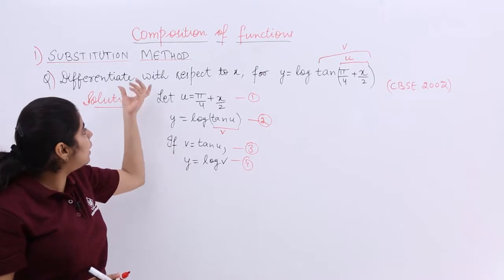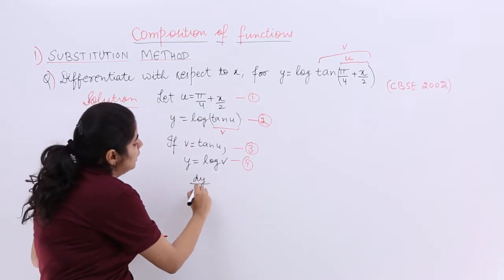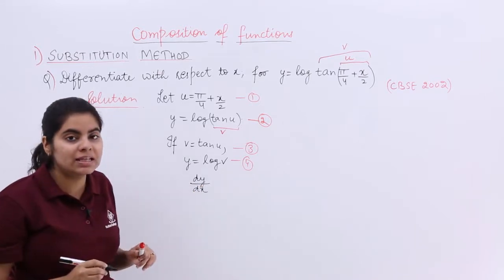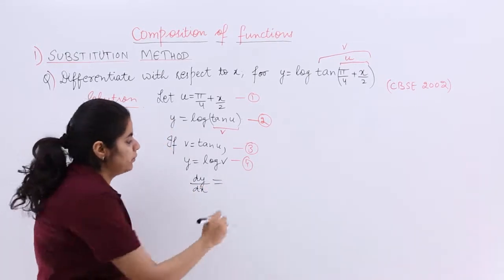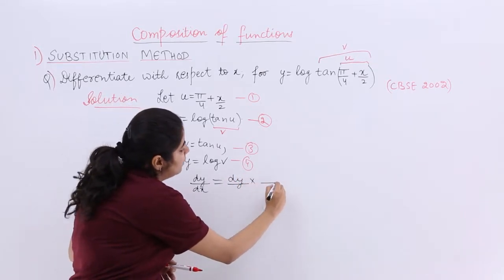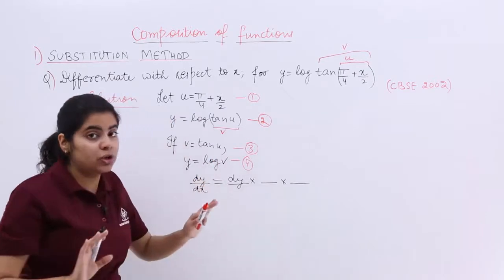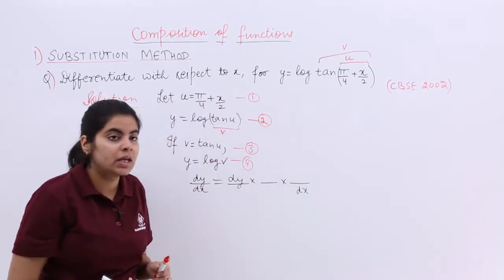The motto remains the same to find differentiation with respect to x. That means to find dy by dx. But this time not only one substitution rather two substitutions are there. So it becomes dy by something multiply by something multiply by something we are not sure of it. The last would be dx and things will cancel.